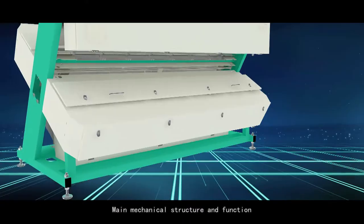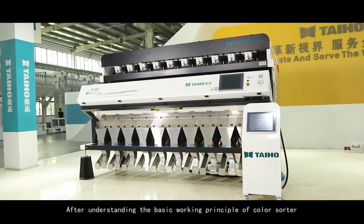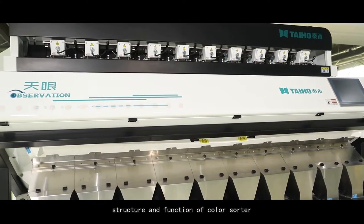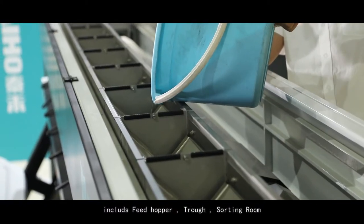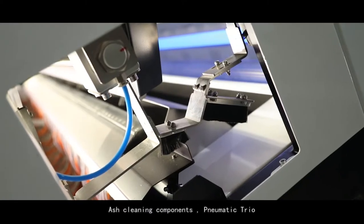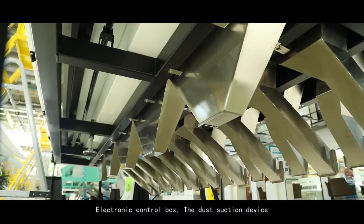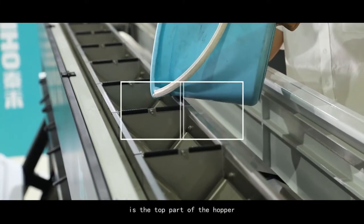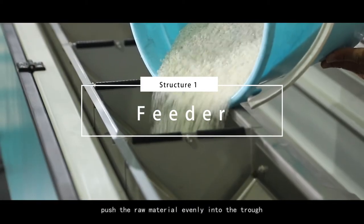Section Two. Main Mechanical Structure and Function. After understanding the basic working principle of color sorter, now we start to explaining the main mechanical structure and function. The main mechanical structure is composed of eight parts: feed hopper, trough, sorting room, ash cleaning components, pneumatic trio, electronic control box, dust suction device and discharging device. Feeder is the top part of the hopper. Its main function is to push the raw material evenly into the trough.